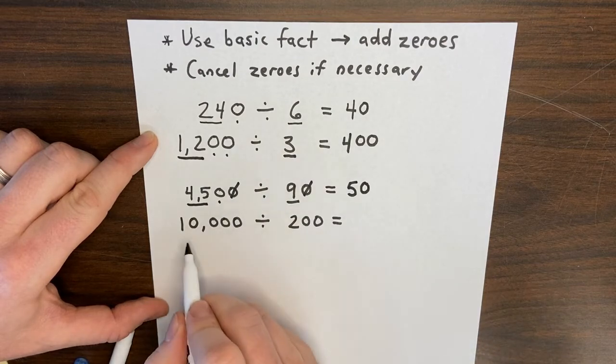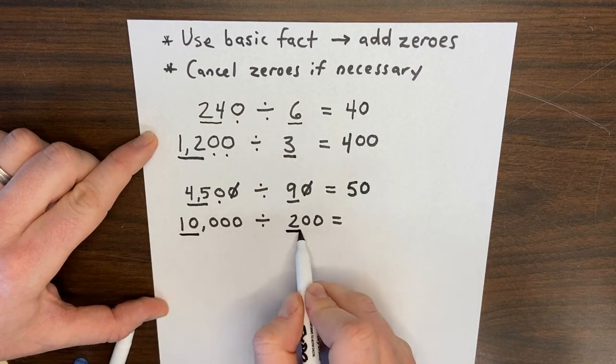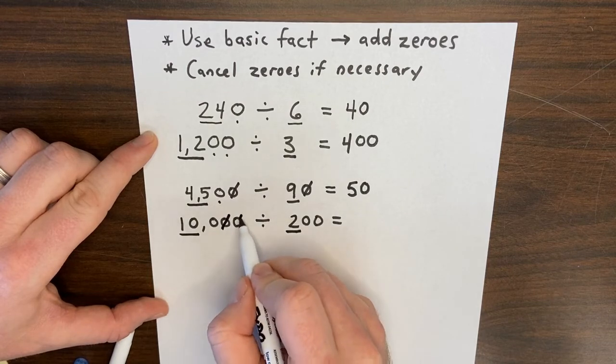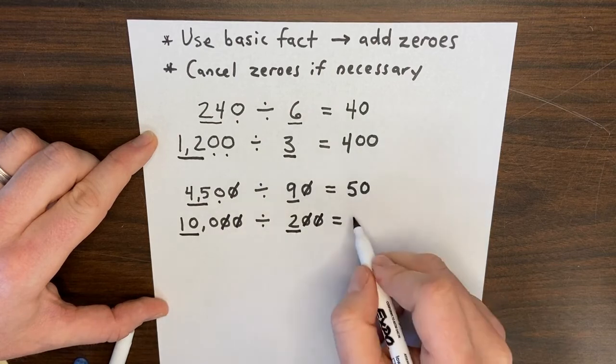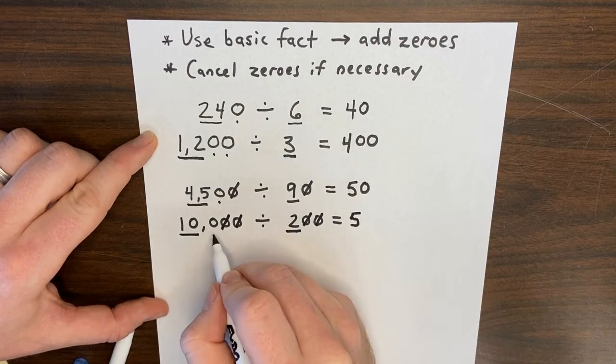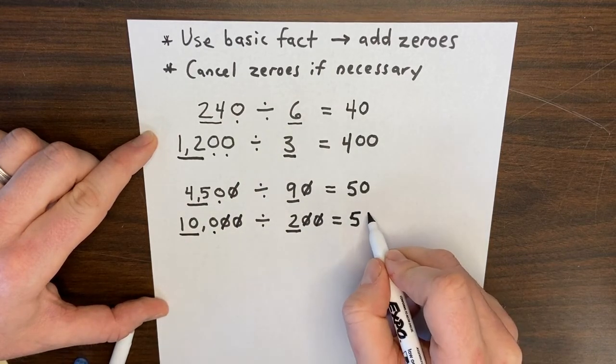For the next one, my basic fact is 10 divided by 2. This time I can cancel out two zeros. 10 divided by 2 is 5. I have one zero left, so my quotient is 50.